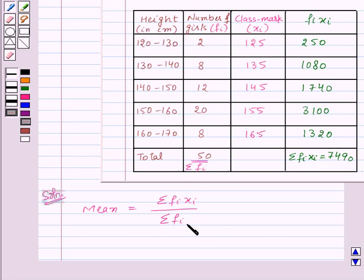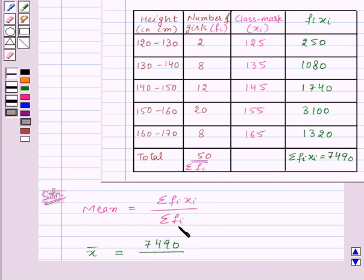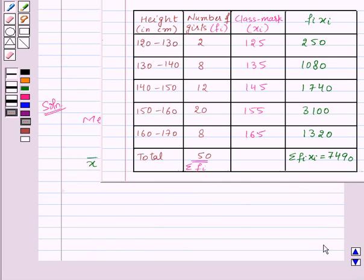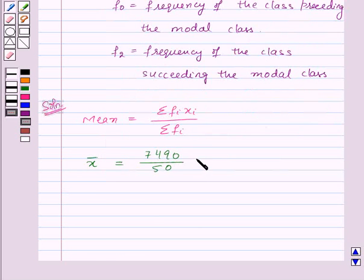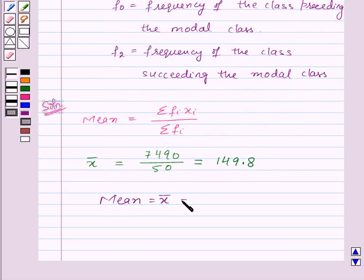Now let us substitute the values to find out mean. Mean is also denoted by x̄. So mean x̄ will be equal to σfᵢxᵢ that is 7490 upon σfᵢ that is 50, which will be equal to 149.8. Thus, mean x̄ is equal to 149.8.